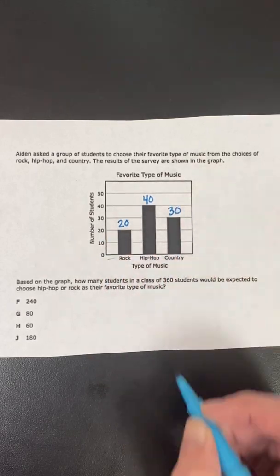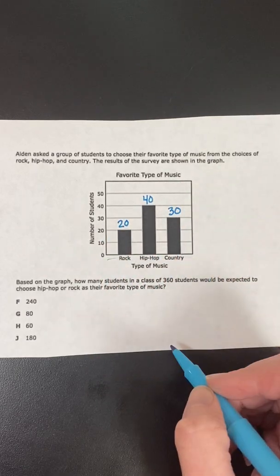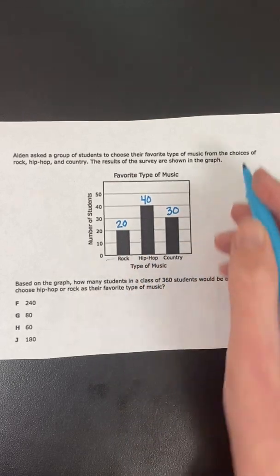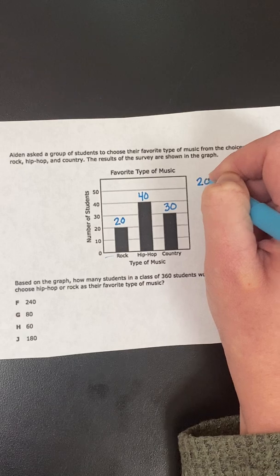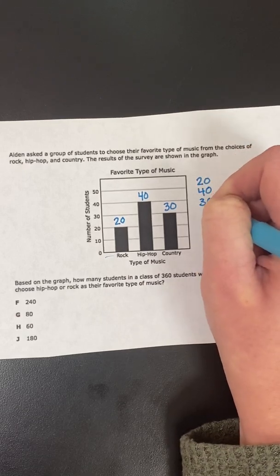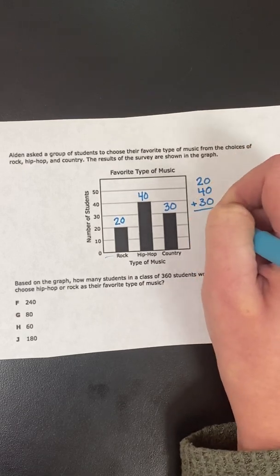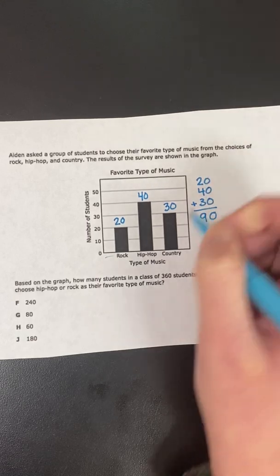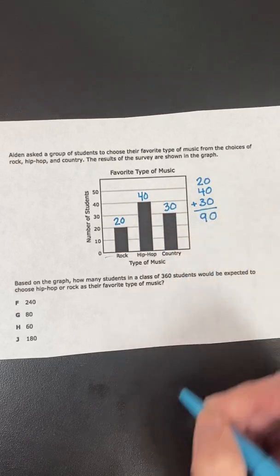So after I've labeled those bars, I need to find my total. And to find a total when I have three different groups, we know we need to add. So I need to take my 20, my 40, and my 30, add those together. 2 plus 4 is 6, plus 3 is 9. So I have a total of 90 people here.